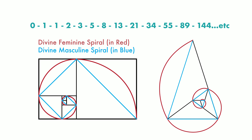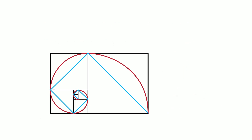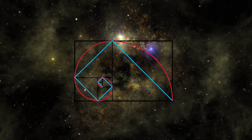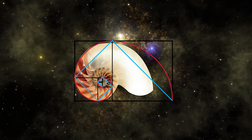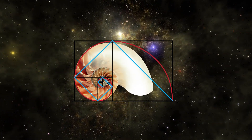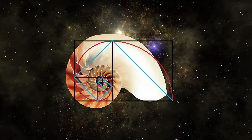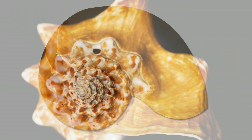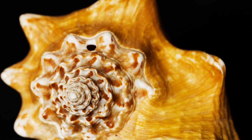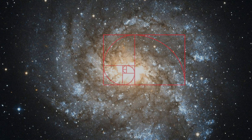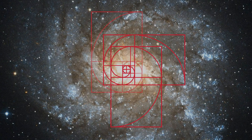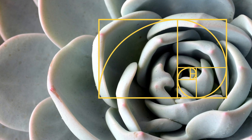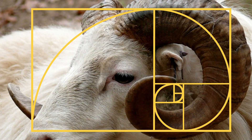This golden spiral can be observed everywhere in nature. Here is one of my favorite shapes in nature — the nautilus shell follows beautifully the golden spiral. Truly fascinating. You can also see it in galaxies forming the golden spiral, as well as in flowers and many other shapes formed by nature.